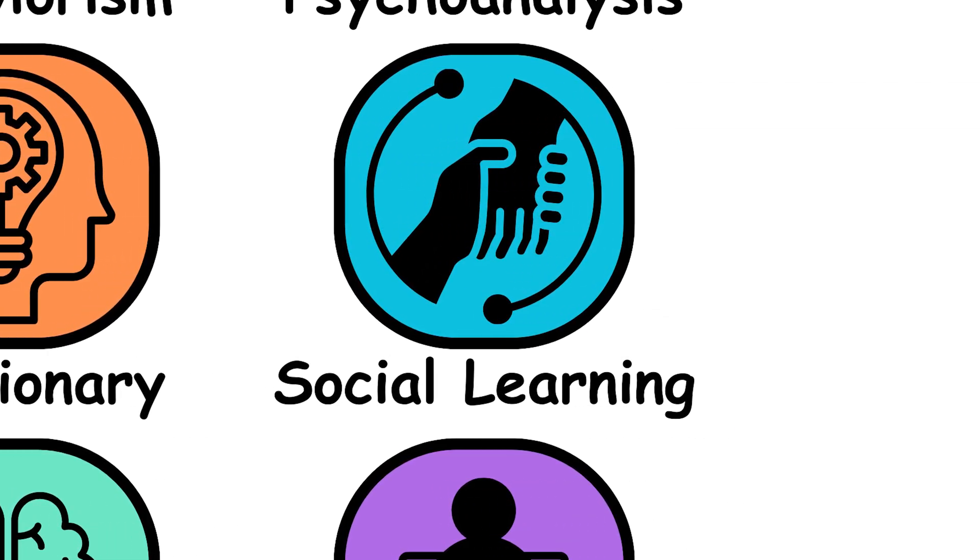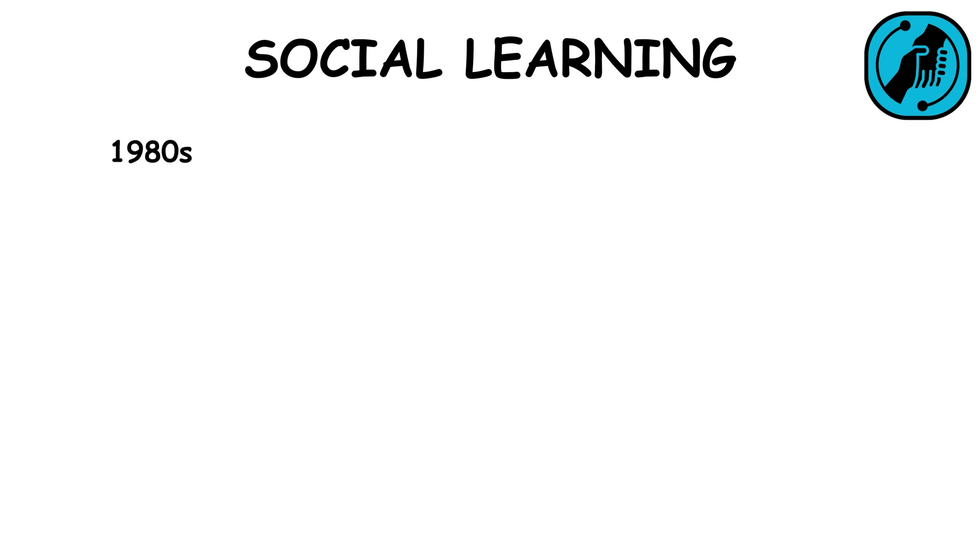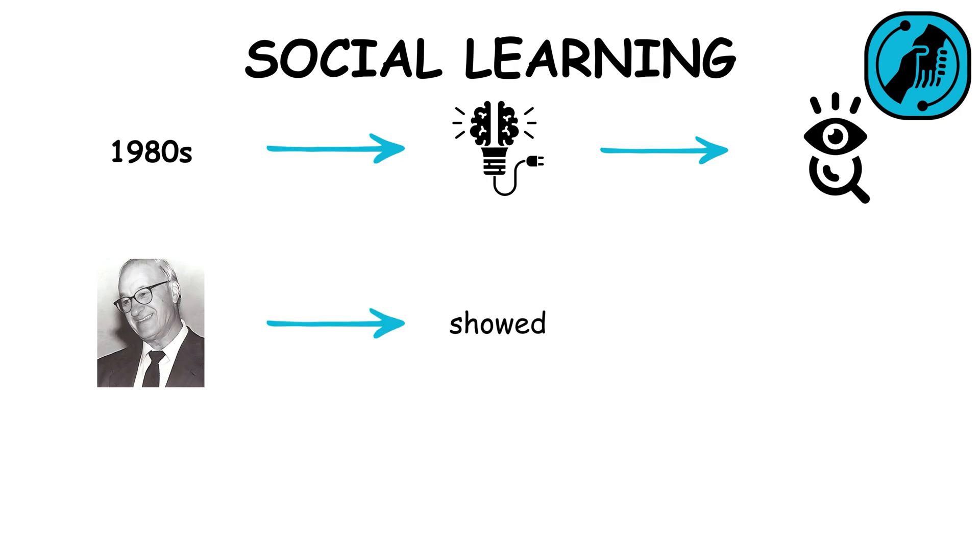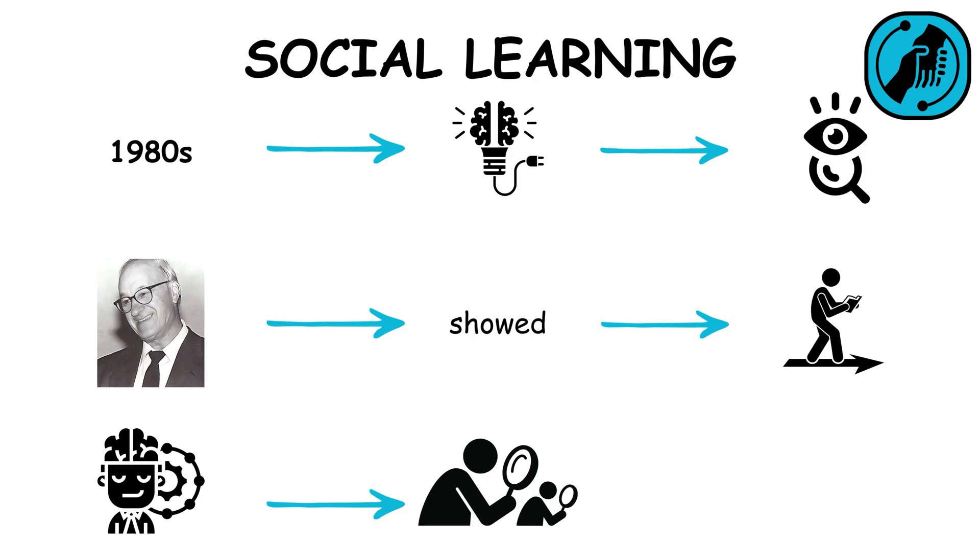Social learning theory, prominent in the 1980s, posits that people learn from observing others. Albert Bandura's work showed that behavior is learned both through direct experience and by observing others, highlighting the role of social context in shaping behavior.